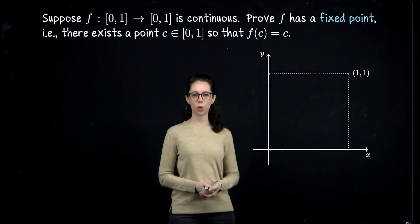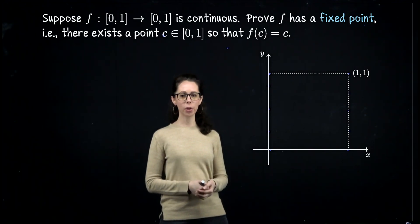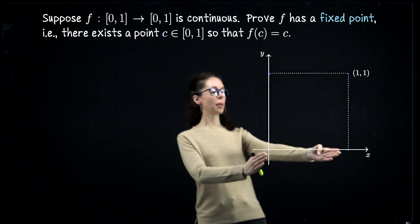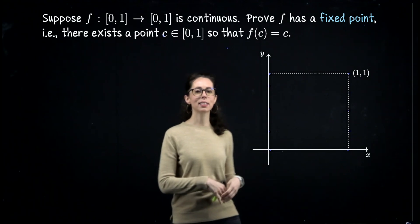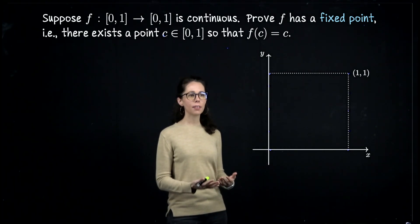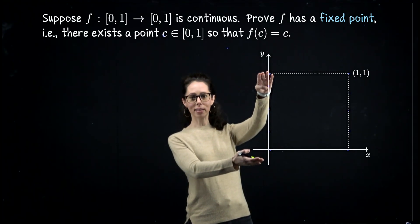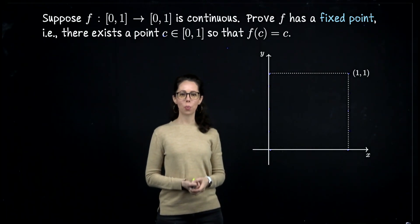In this exercise, what we are going to do is imagine that we have a continuous function f whose domain is the unit interval on the x-axis and whose range lives within the unit interval on the y-axis. So f is a continuous map from [0,1] to [0,1].